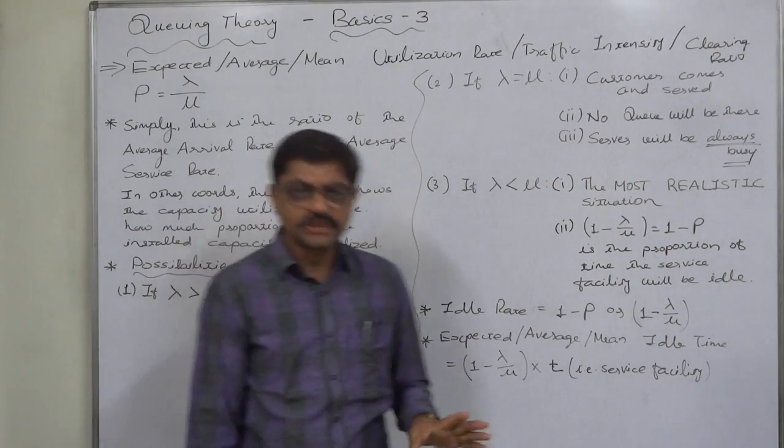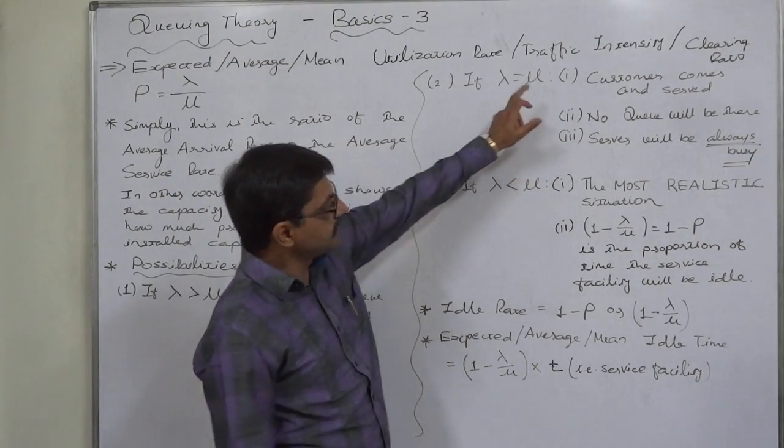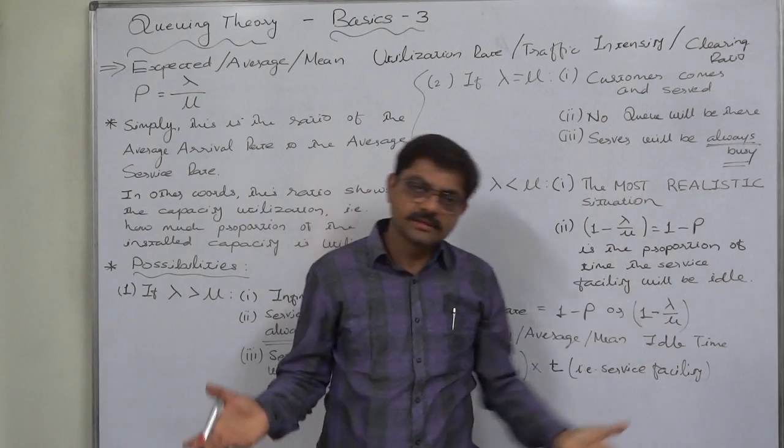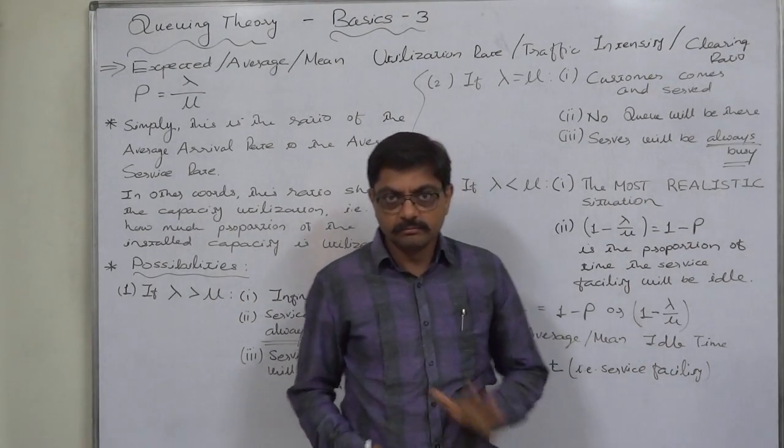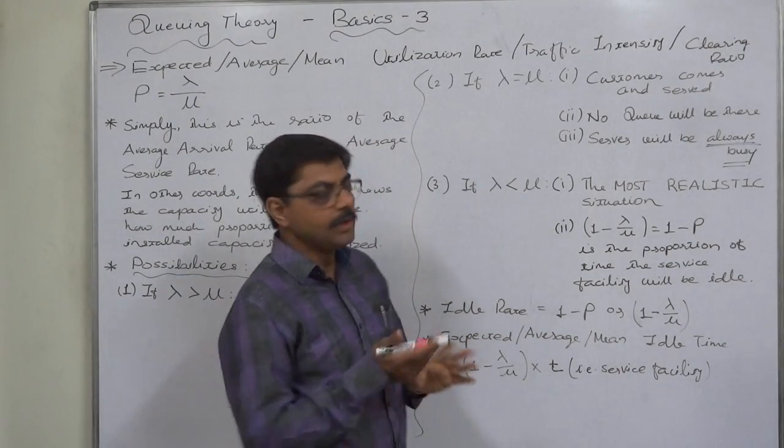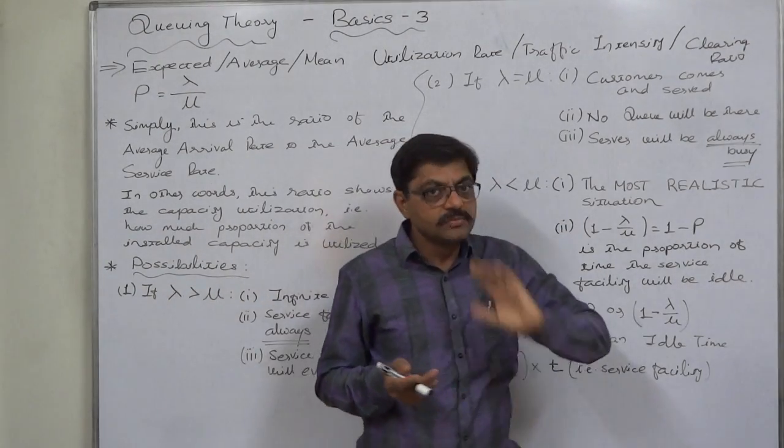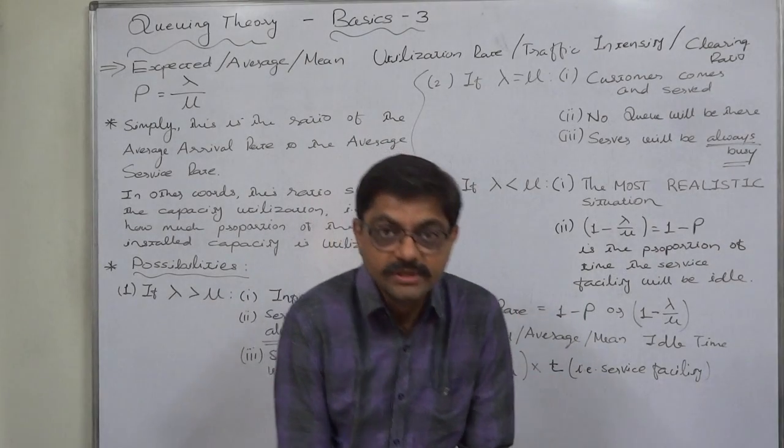Mostly we cannot see this. What happens? Customer comes and customer is served. So no queue will be there. Theoretically there will be no queue. And the server will always be busy.